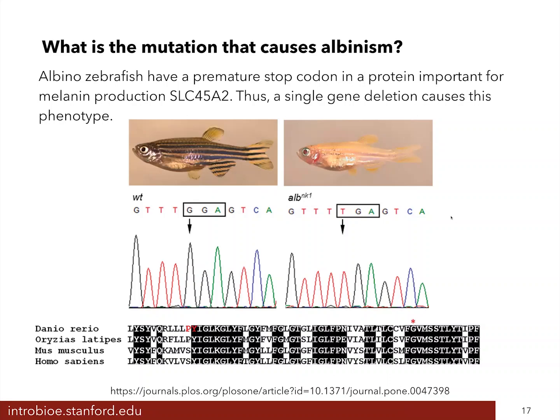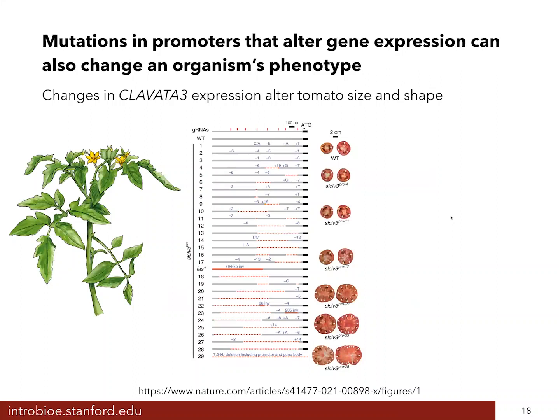It's not just in the protein-coding regions that changes in DNA sequence can dramatically alter an organism's phenotype. Here's an example from tomato where scientists made changes in the promoter region upstream of a gene called clavata3. These mutations change how strongly clavata3 is expressed — in the wild type it's expressed pretty strongly, and as you make more mutations you reduce the amount of clavata3, and you get different phenotypes including changes in fruit locule number and fruit size.